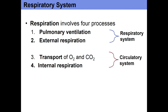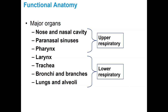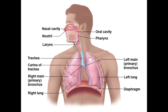Let's talk about the anatomy of the respiratory system. From a functional standpoint, it's broken up into the upper and lower respiratory systems. The differentiation between the upper and lower respiratory tract is at the larynx. Everything at the larynx and inferior is part of the lower respiratory tract, and everything above — the pharynx and above — is part of the upper respiratory tract.